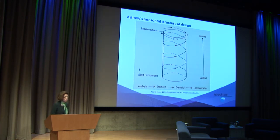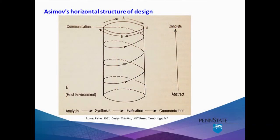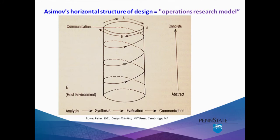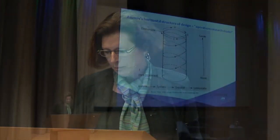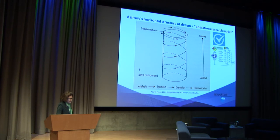Asimov's horizontal structure of design begins with analysis, through synthesis and then evaluation, and concludes with communication. It also includes decision-making cycles as you move from abstract to concrete vertically. Asimov viewed this approach as iterative, both within and between the various phases of activity. Asimov's structure is roughly congruent with the operations research model, which has distinct phases of activity but also has feedback loops built into the process. Operations research requires objective performance criteria that will then fundamentally guide your approach, and here again there's a close alignment with Dr. Steinitz's framework.